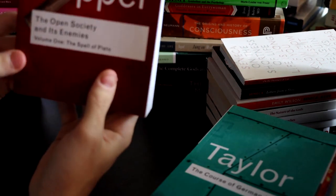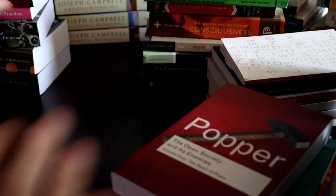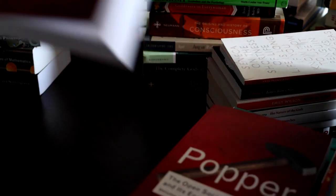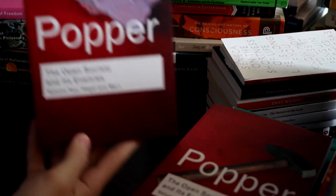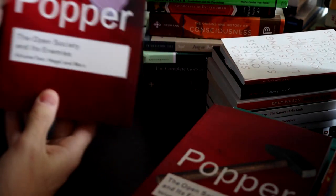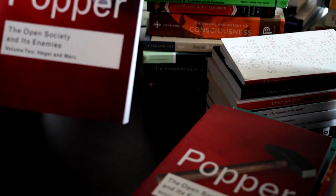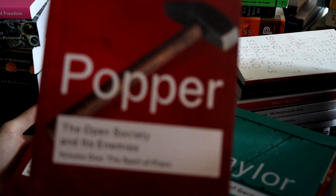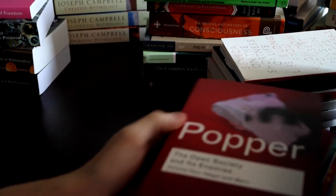Popper, The Open Society and Its Enemies. That's volume two. This is volume one. This is volume two. It's the same book, just different volume. This one's about Hegel Marx and Marxism and stuff like that. This one's about like Plato and Platonic Idealism and stuff like this.